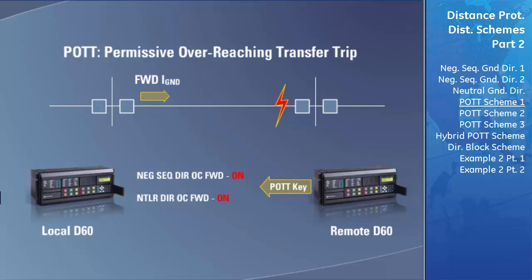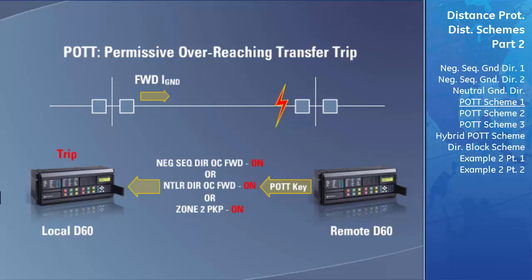Either the local D60's forward negative sequence directional overcurrent element or the forward neutral directional overcurrent element, as well as the picking up of a zone 2 fault, will cause the POTT scheme to trip the breaker if it receives a permissive key from the remote D60. Any combination of the two reasons the remote D60 sends transmit keys and the two reasons the local relay identifies a fault will isolate the transmission line and verify the fault is located on the protected line.